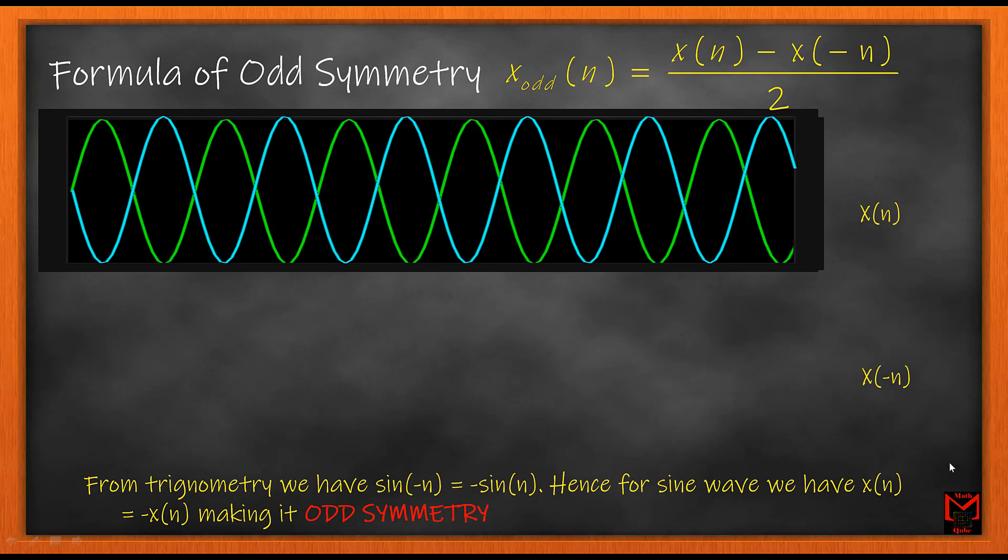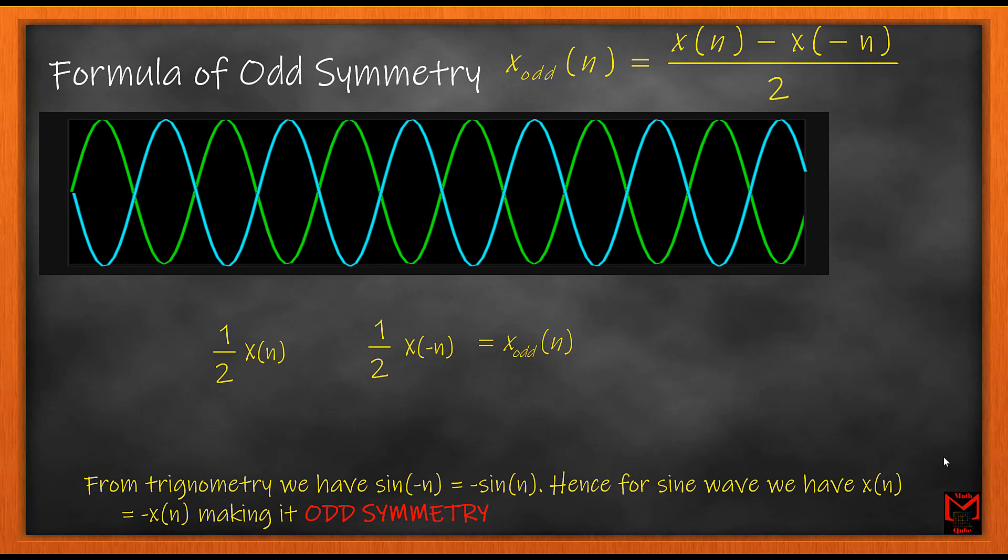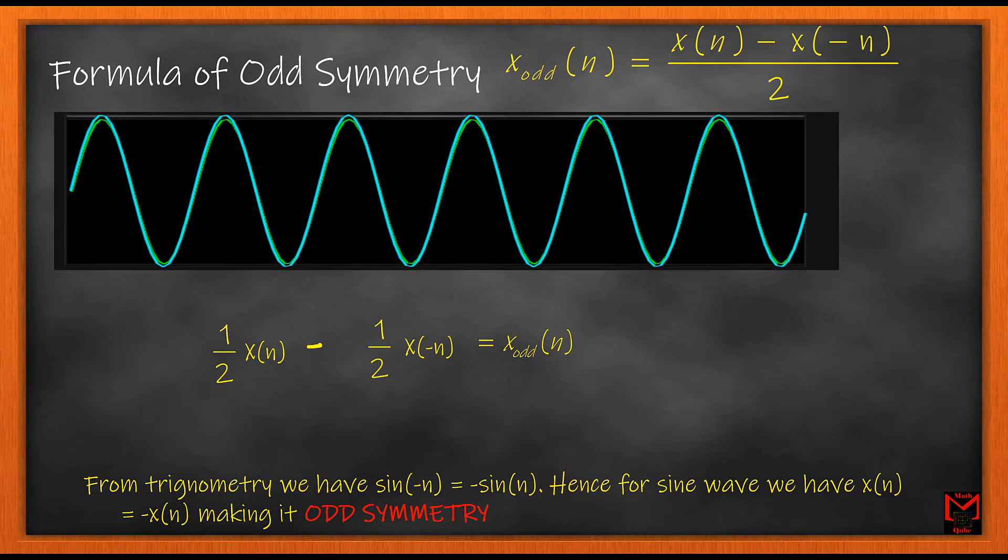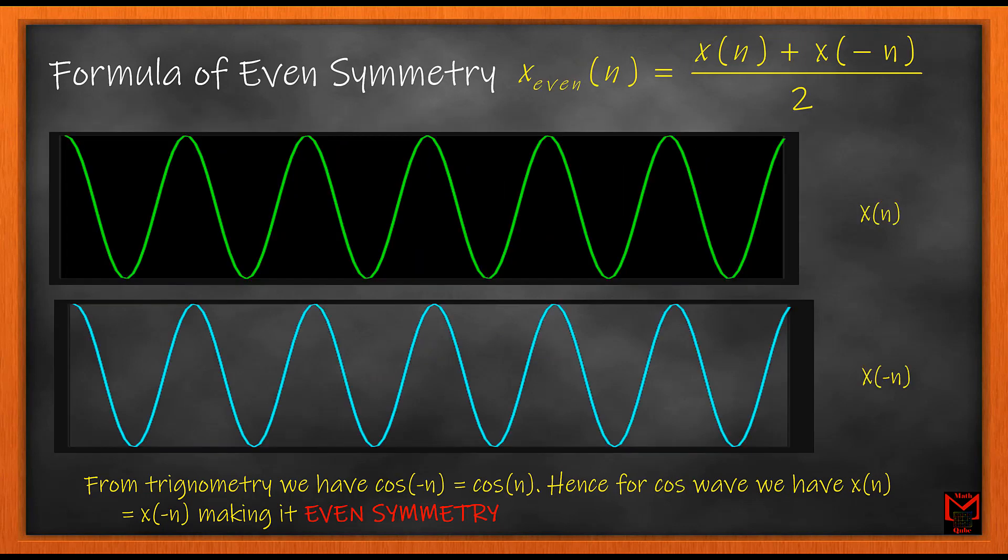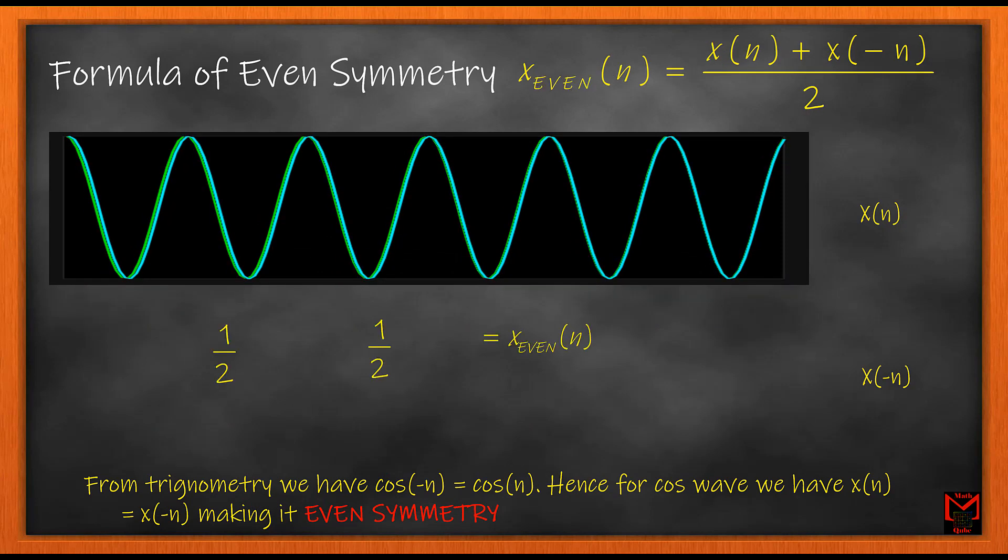As seen here, the odd symmetry for sine when taken as sum gives the value 0. However, the difference of these two signals gives us the odd component of the signal. For even symmetry, the sum gives the even signal and the difference produces 0.